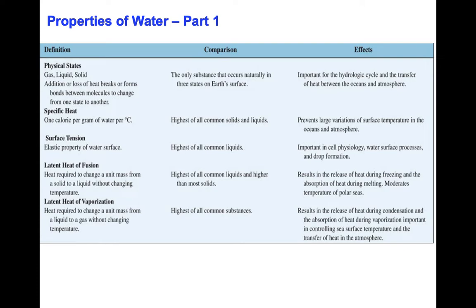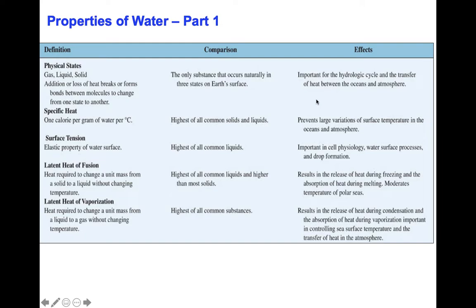Let's look at some characteristic physical properties of water. Water is the only substance on the Earth's surface that occurs naturally in three different states — gas, liquid, and solid. This property of water is extremely important for the hydrological cycle and also for transferring heat between the ocean and the atmosphere as water goes from liquid phase into vapor phase to provide the atmosphere with much-needed water molecules.